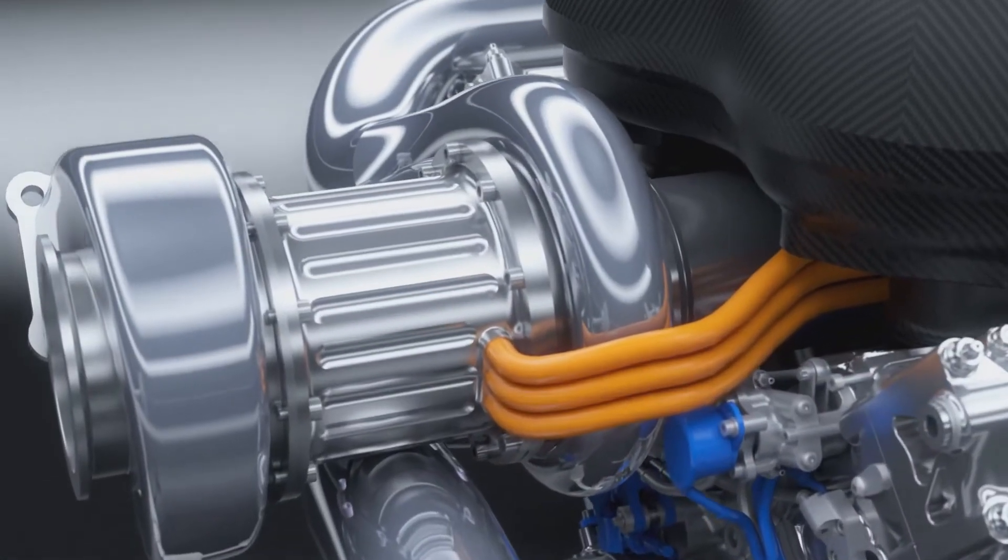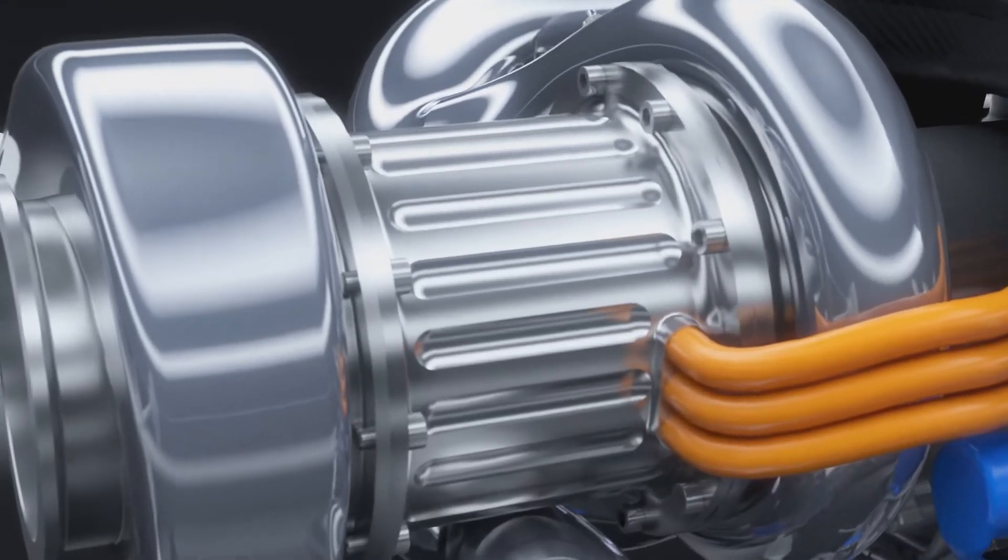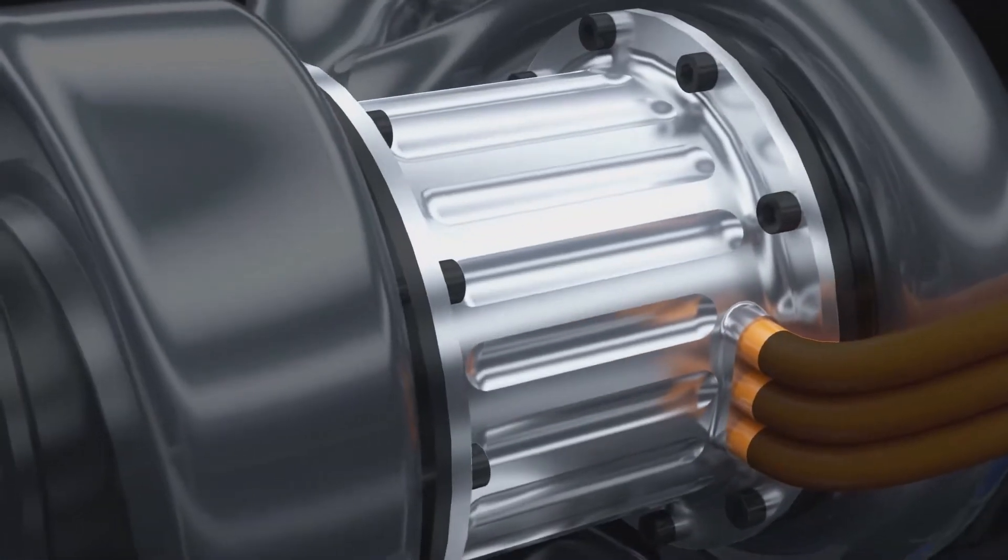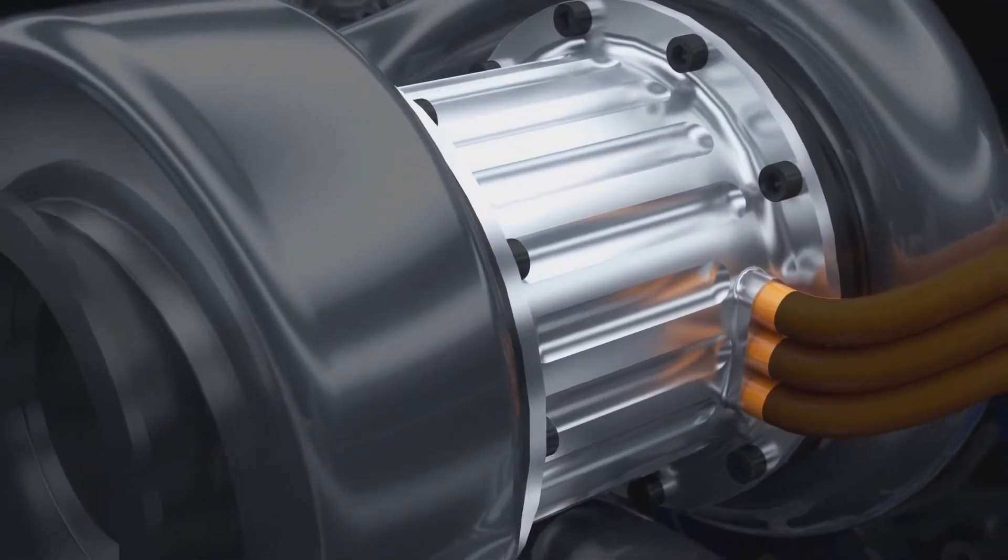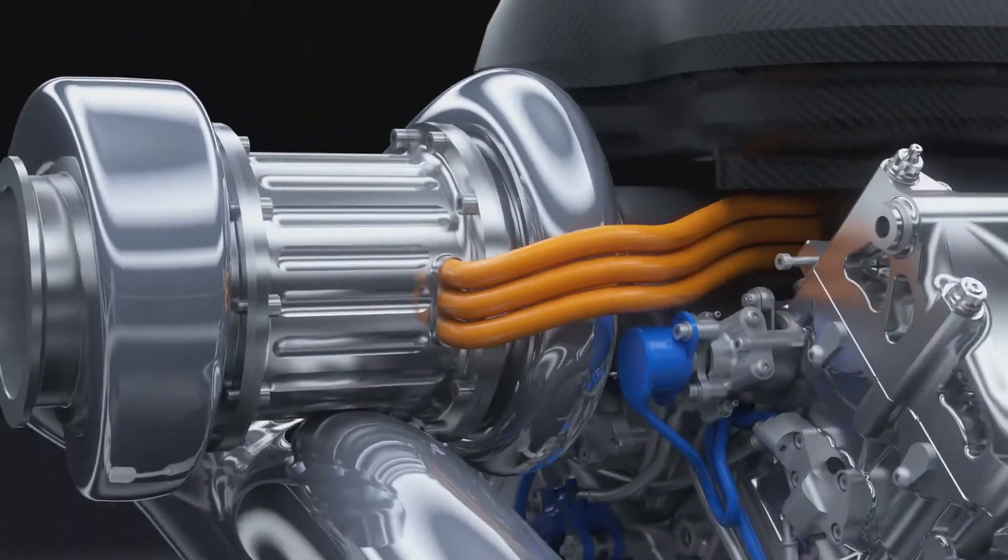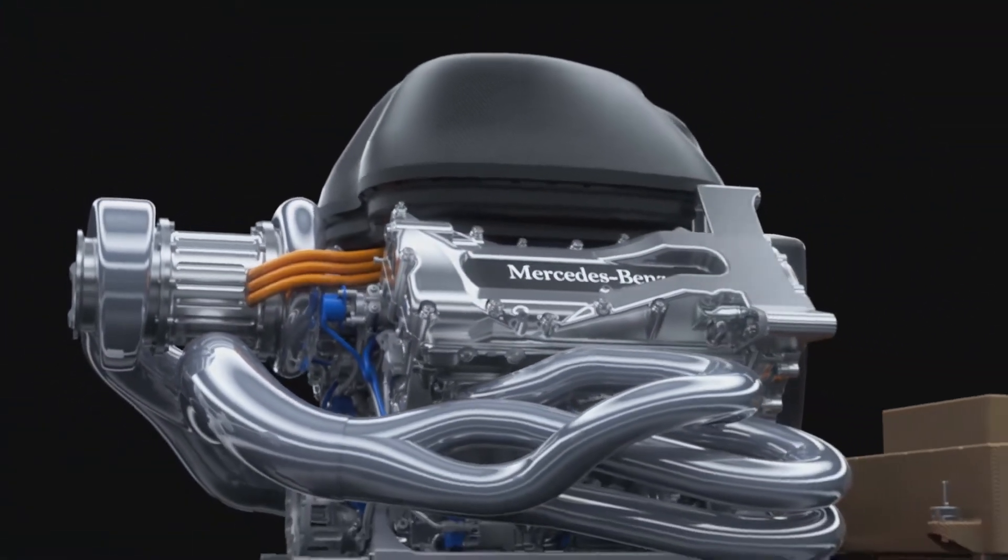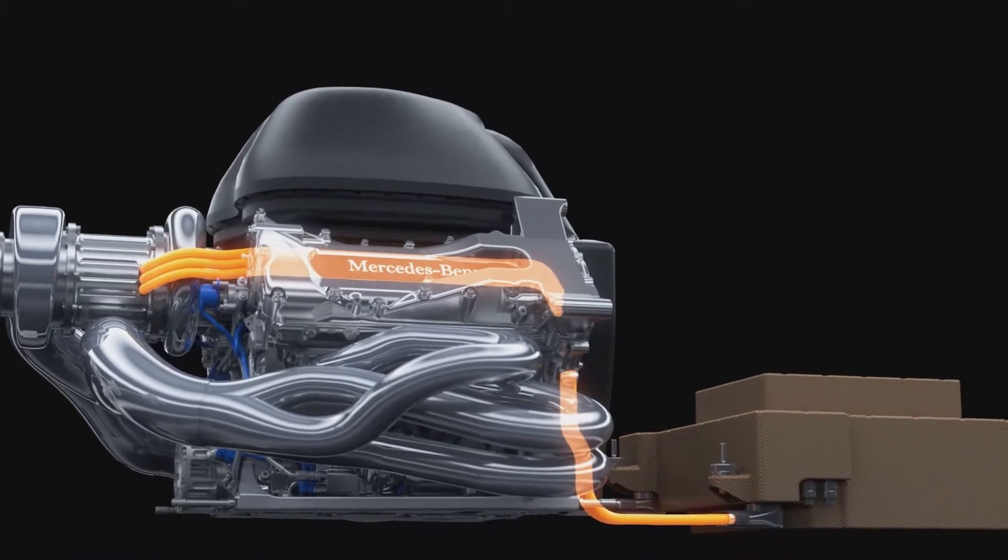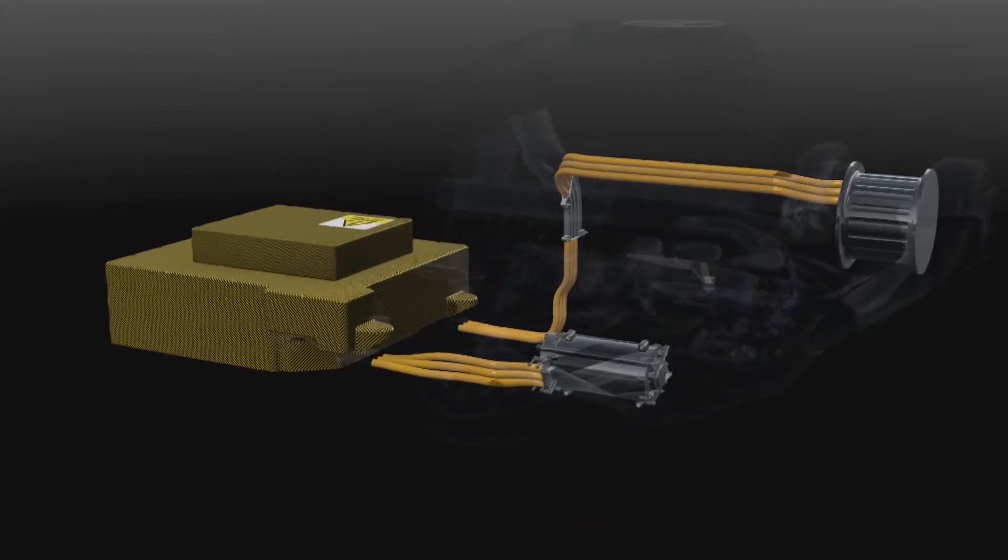The second motor generator unit, the MGU-H, harvests the turbo energy. As a motor, it spins up the compressor to eliminate turbo lag, but it can also send energy directly to the other electric machine and vice versa for maximum efficiency.